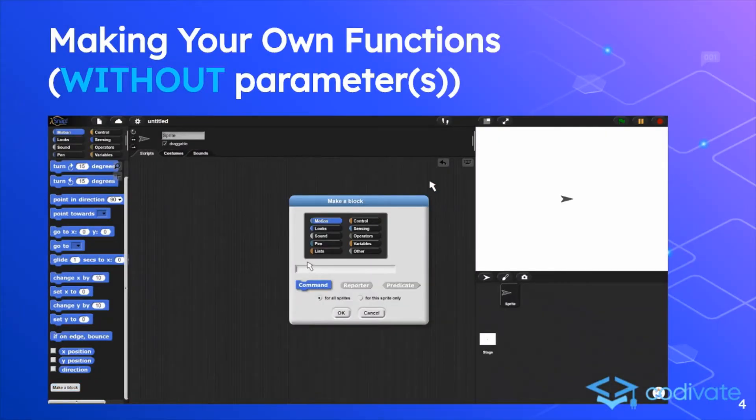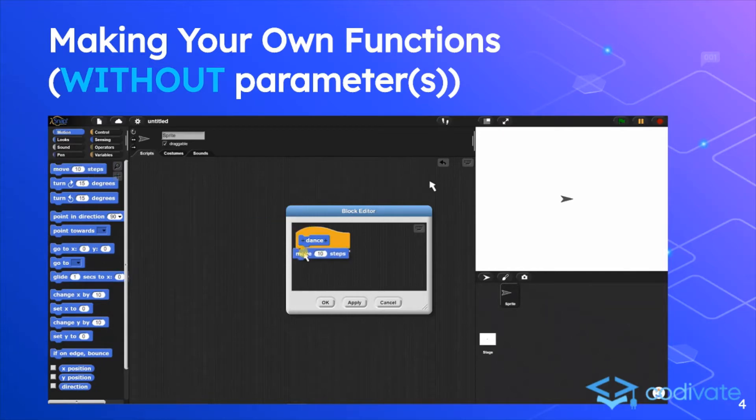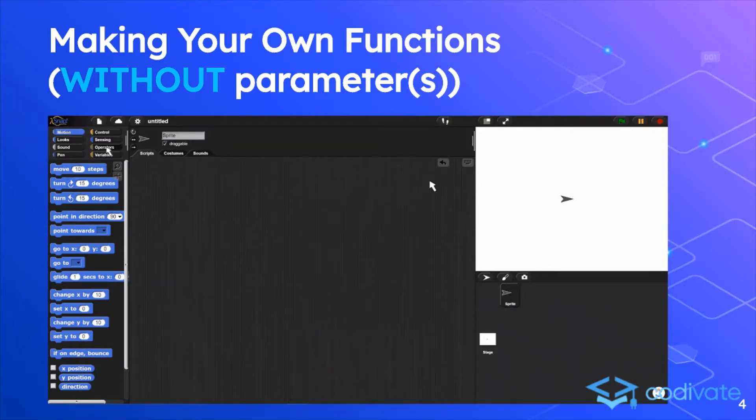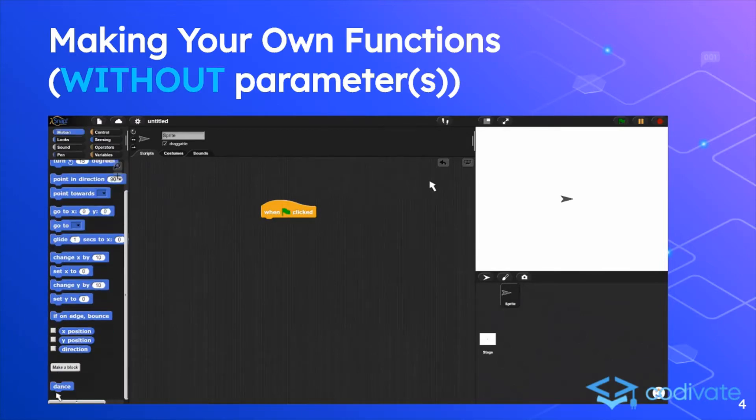In this animation, a block is being created using the Make a Block button on the bottom of the screen. The block is available in any category, not just motion. After clicking Make a Block, you can choose what type of function you want: a command, a reporter, a predicate, and you can name your function. Looking at this animation, if we do green flag click and then dance and then click run over and over again, we can see that the dance function is running.